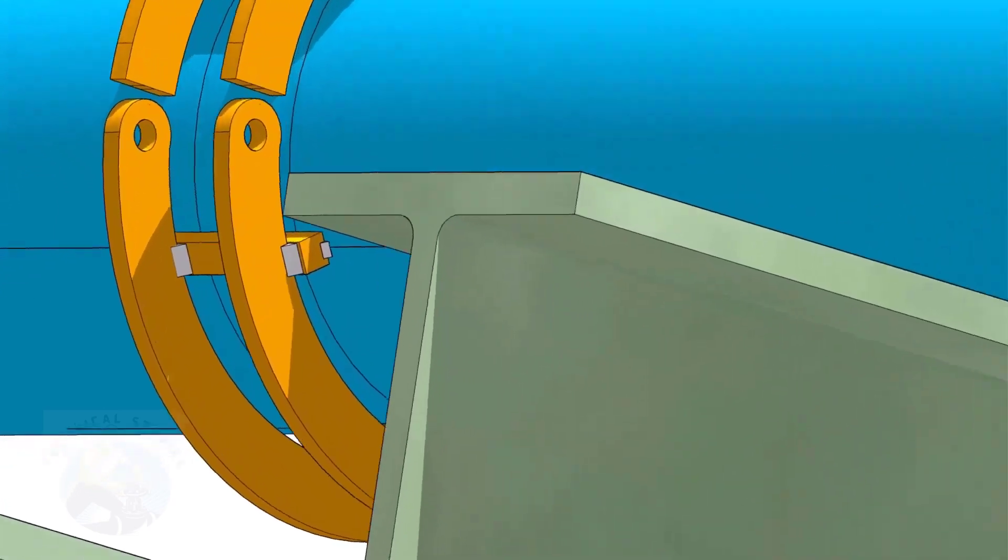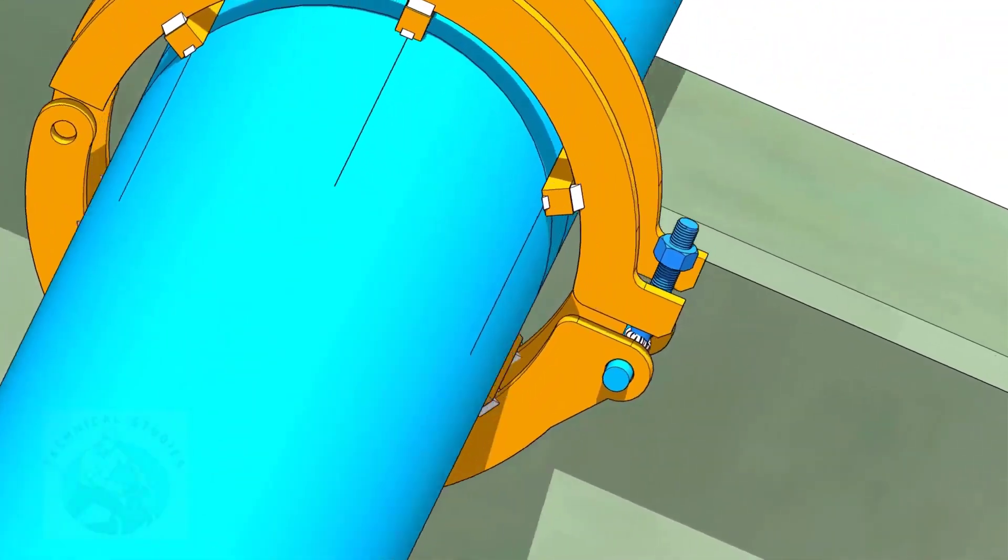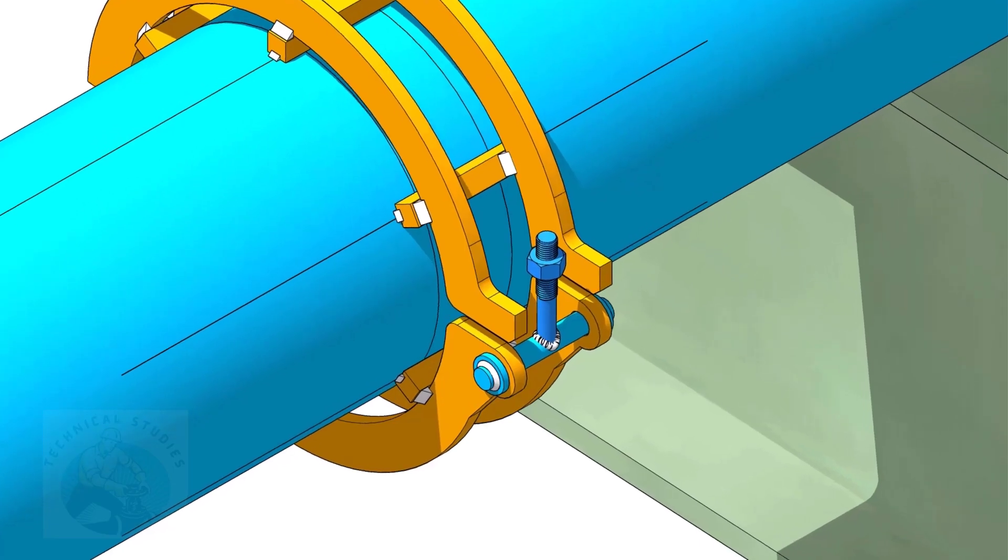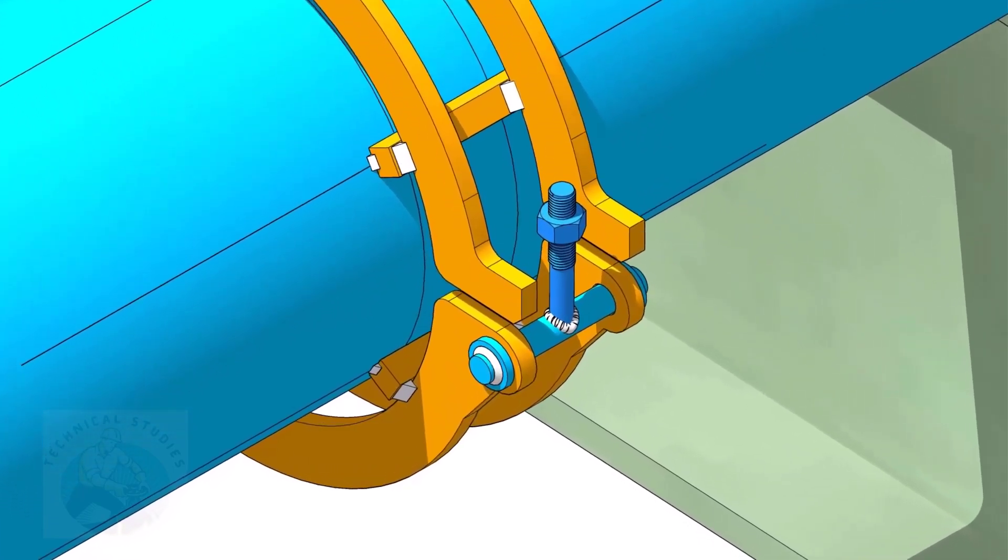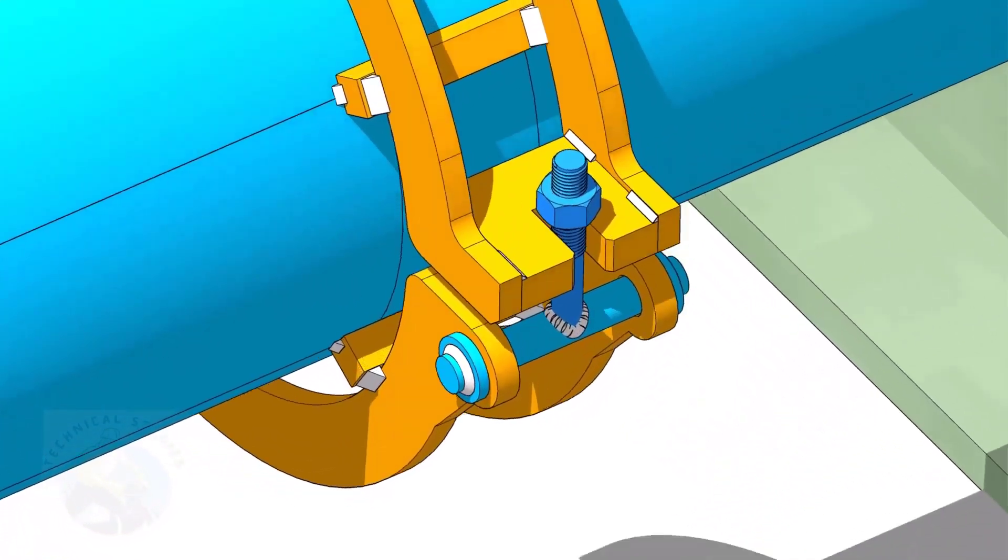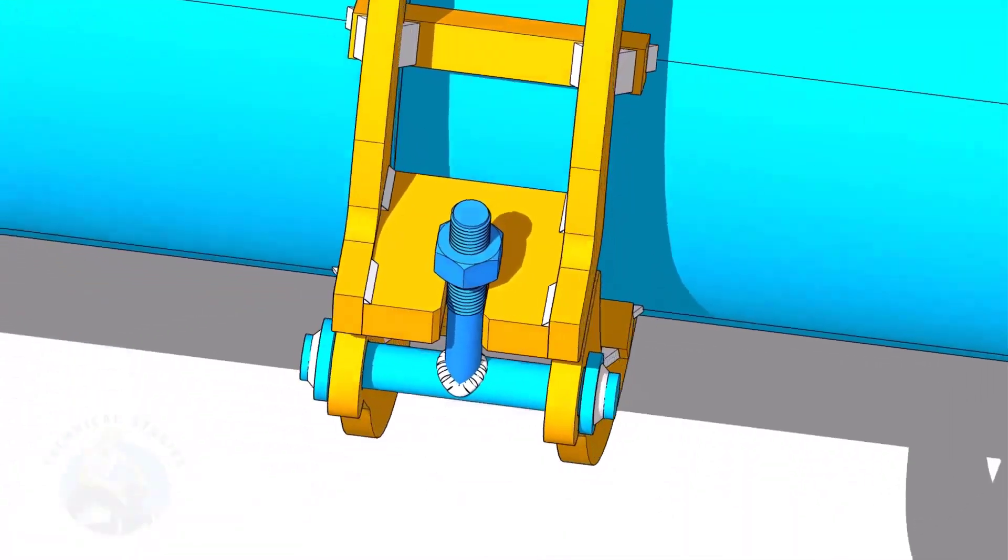First, put the bolt and the hinge plates and tack weld the hinge plates with the top rings. Tack weld the slotted plate with the top rings as shown.